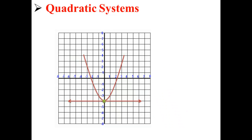Let's say that we have two quadratic equations and we graph them both on the coordinate plane. A solution to that system is any point where they intersect. For example, this line and this parabola intersect at the point 0, negative 4. So the solution to this quadratic system would be 0, negative 4.